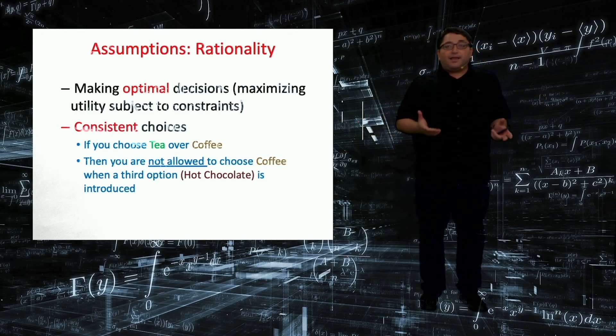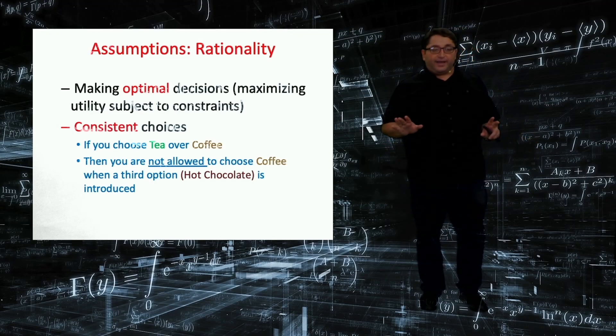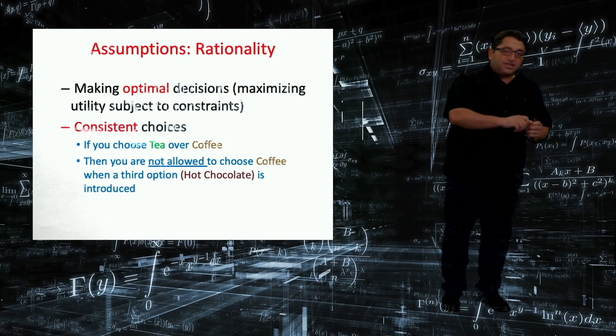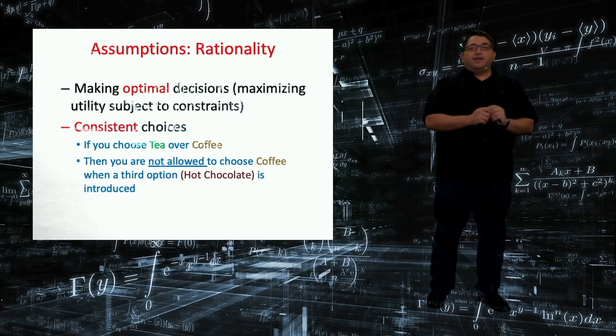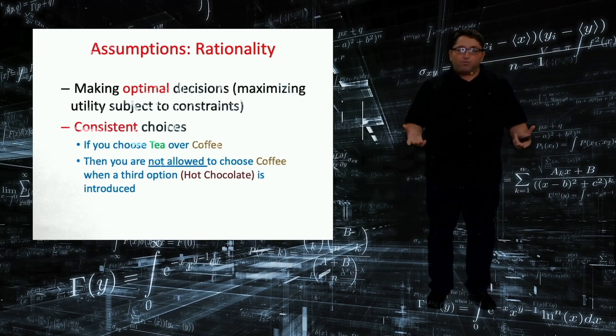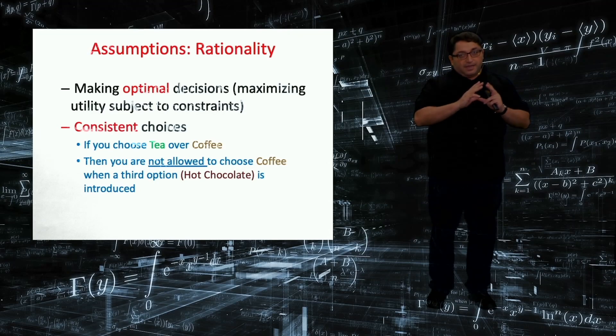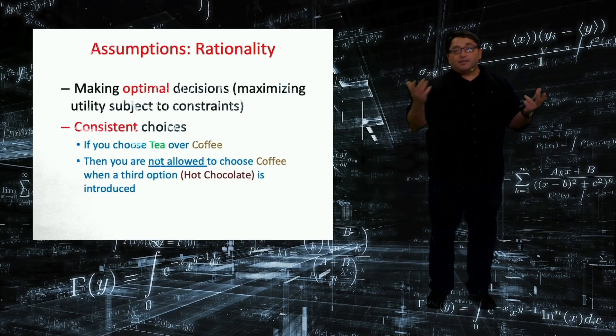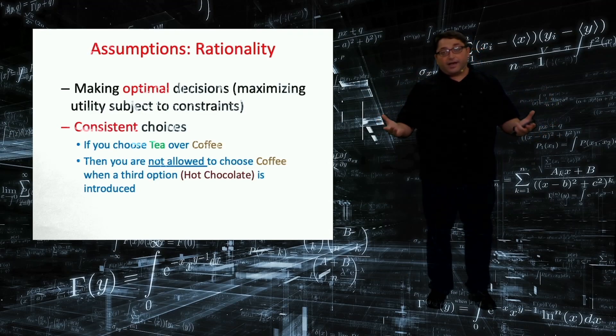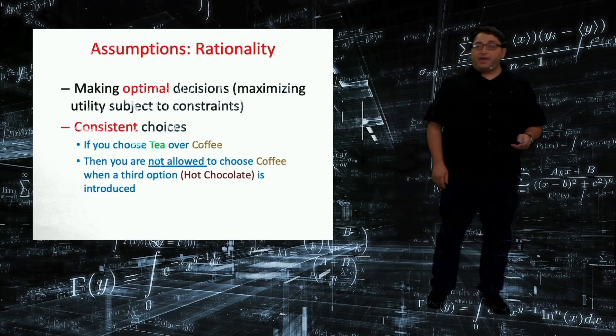And rationality means that my ranking between tea and coffee should not change after hot chocolate is introduced. So I might like hot chocolate better than tea and coffee, that is completely fine. But I should not change my preference between tea and coffee. So in this new problem, I am allowed to choose hot chocolate or tea. If I am choosing coffee, then my choices are not being consistent. That means that I am not a rational decision maker.